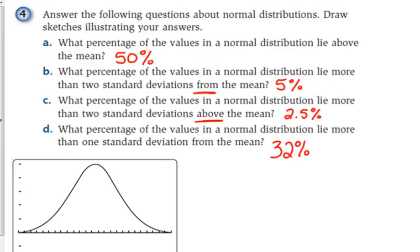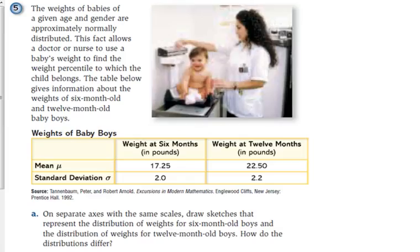So that got us thinking a little bit. Let's look at some actual data here. We've got the weights of babies of a given age and gender are approximately normally distributed. If you've ever heard, if you had a younger sibling, your parents talking about what percentile they are for height and weight, they've kind of charted this so you can kind of compare. Now this is for baby boys.